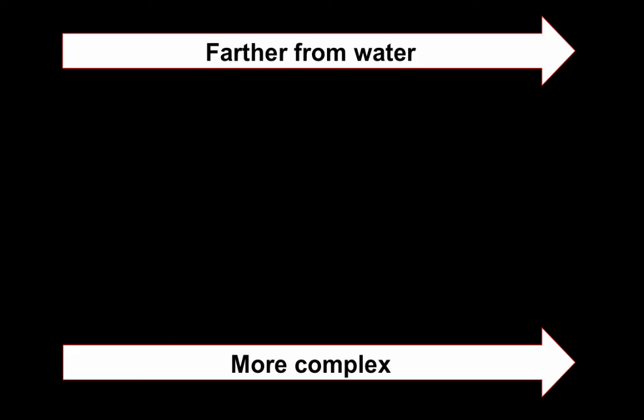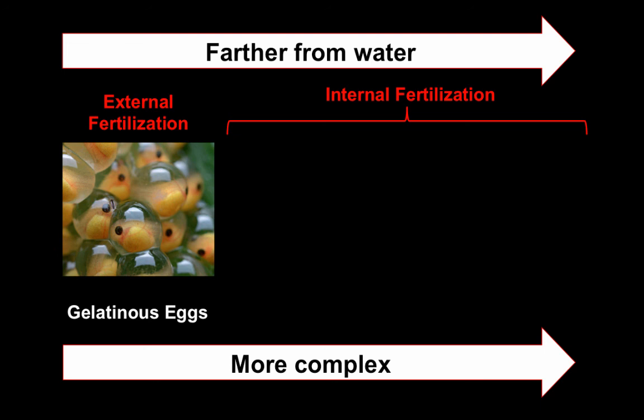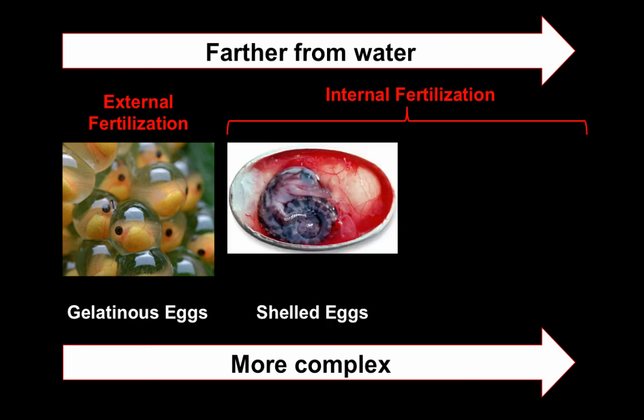So again, we're looking at this trend of moving farther from water and becoming more complex. Our gelatinous eggs, which are externally fertilized, have to be in the water — a fairly non-complex system of reproduction, found in fish and amphibians. Then as we move on to land, we do internal fertilization because we have our shelled eggs. And remember, this shelled egg allows us to move much farther from water.